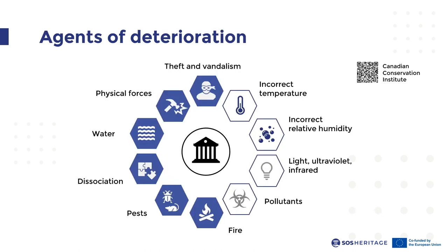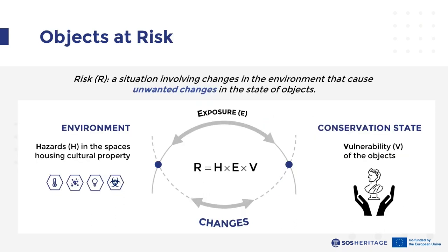In this slide is shown a scheme proposed by the Canadian Conservation Institute for the so-called 10 agents of deterioration. According to this classification, various agents should be considered in order to mitigate deterioration of cultural properties — from physical forces, fire, water, and vandalism, to environmental variables such as incorrect temperature, incorrect relative humidity, radiation, and pollutants. In the study of microclimate, the concept of risk can be adjusted to focus on the environmental conditions possibly causing unwanted changes in the conservation state of objects, directing the investigation toward environmental hazards in conservation spaces to which objects are exposed.